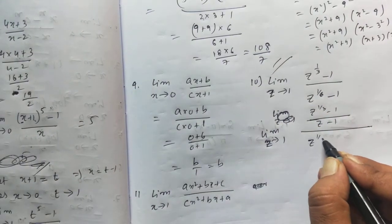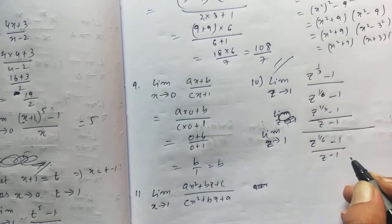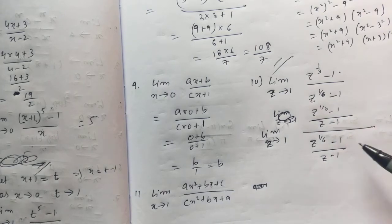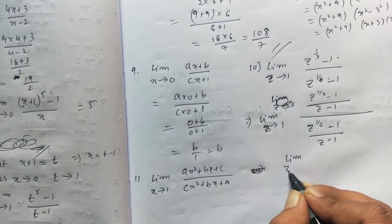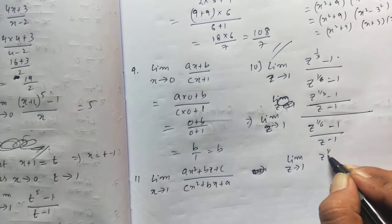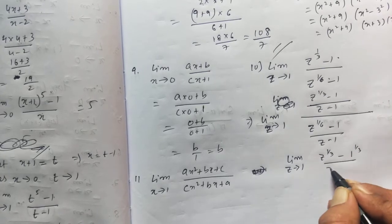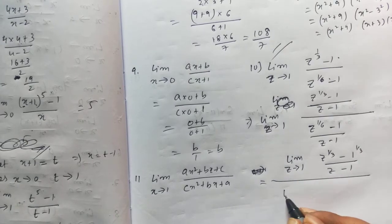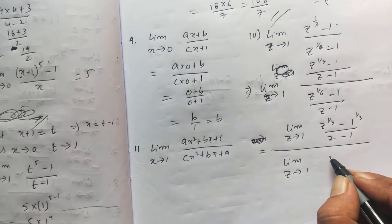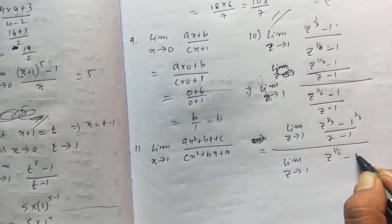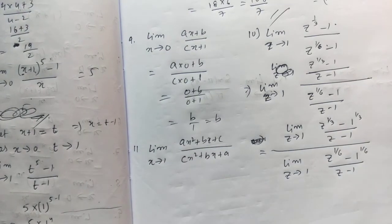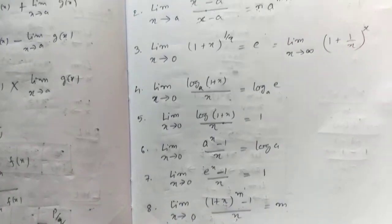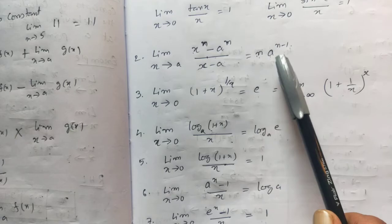I'm dividing (Z − 1) on top and bottom. I'm writing limit Z tends to 1, dividing the numerator also by (Z − 1) and denominator also by (Z − 1) to apply the formula. You can break the limit. In the numerator we have Z to the power 1/3 minus 1; we can write the power of 1 as 1/3 also. In the denominator, limit Z tends to 1, Z to the power 1/6 minus 1 to the power 1/6.